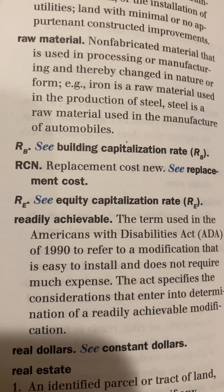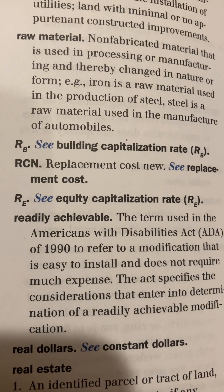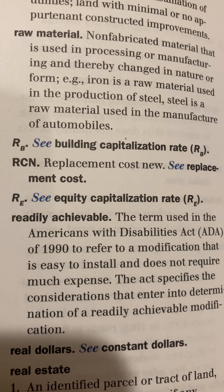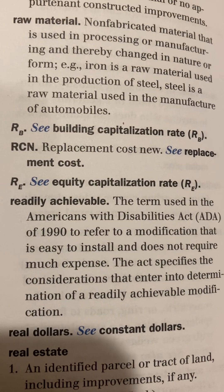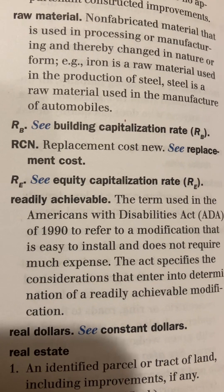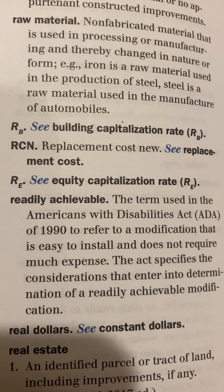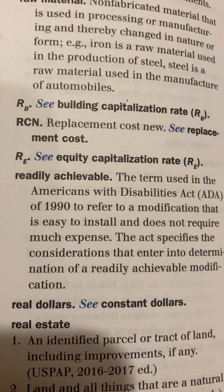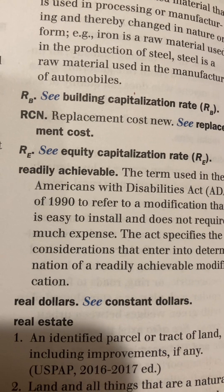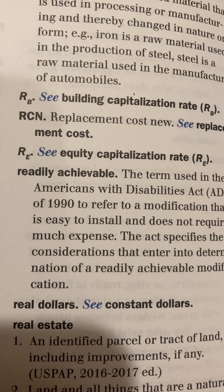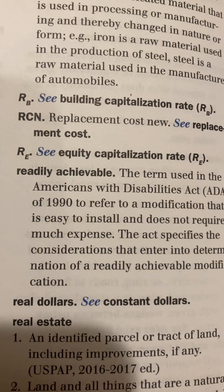Acronyms: R/B — Building Capitalization Rate. RCN — Replacement Cost New; see also Replacement Cost. R/E — Equity Capitalization Rate.